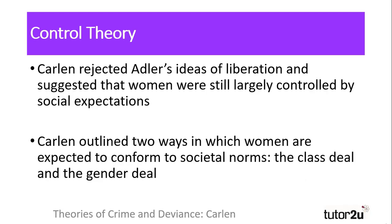Carlin's research rejected the ideas of Frieda Adler, who we have discussed in a previous video. Carlin suggested that feminism had not liberated all women to the extent that Adler suggested, and that women were still largely controlled through both formal and informal mechanisms of social control. Through employment, their role in a family, in their relationships, and through the expectations of society, women were controlled in their behaviours, largely because of society's expectations of how they should behave.